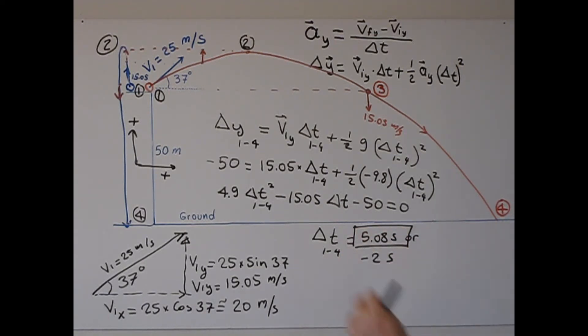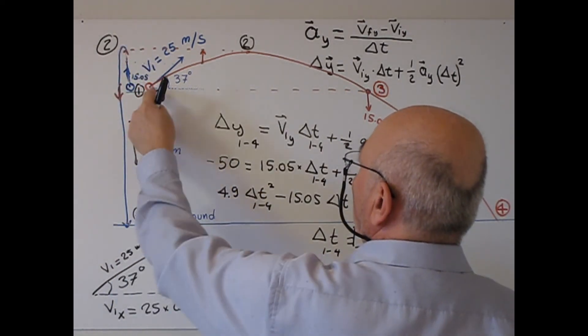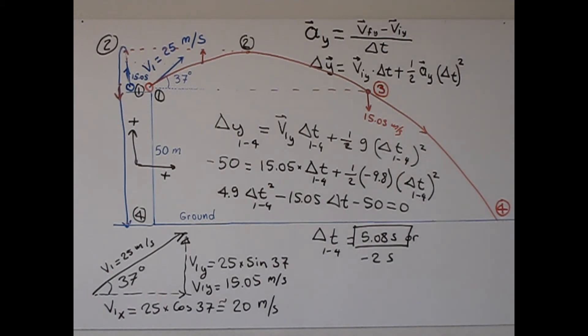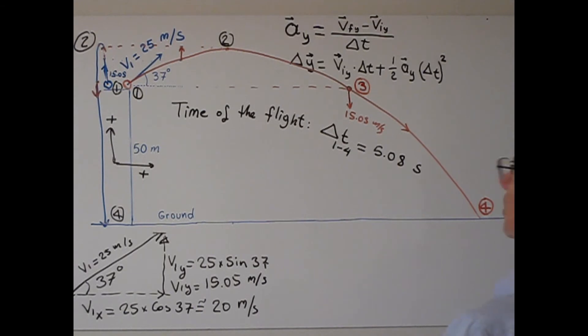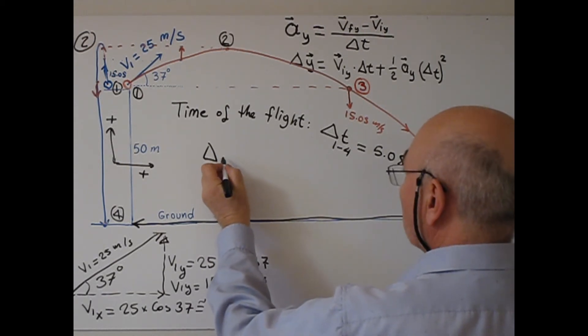5.08 seconds, the ball from here to here, we calculated time of flight. I would like to calculate horizontal range, in other words horizontal displacement from 1 to 4, from here to here. What is the horizontal displacement?